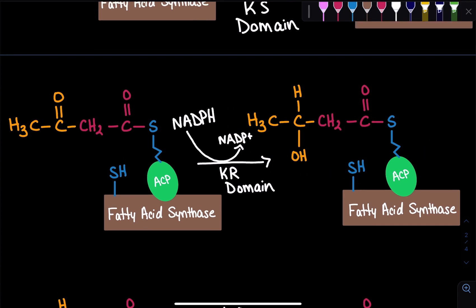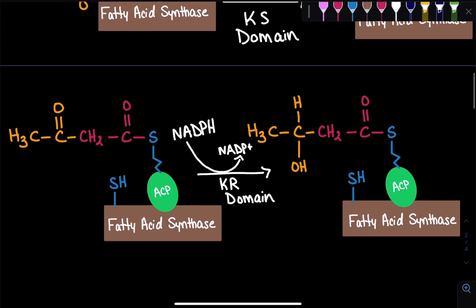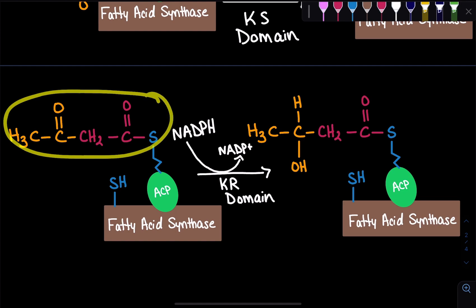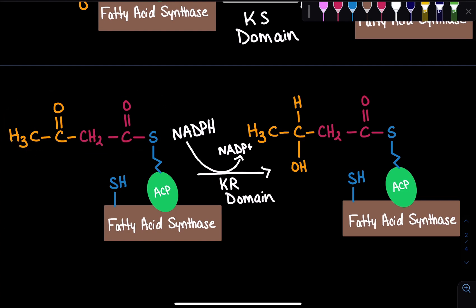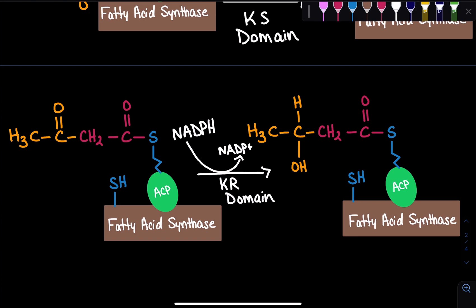Remember, this is all happening on the same enzyme — fatty acid synthase. The ACP has the entire substrate bound, and it just moves the substrate from one domain to another. The ACP is like an arm — it swings from the KS domain to the KR domain and so forth, because each domain has a different function.